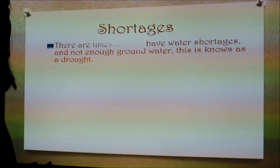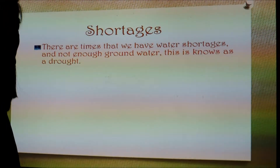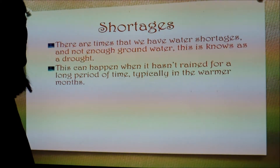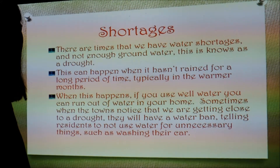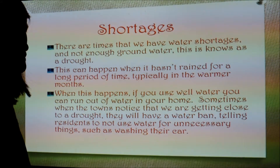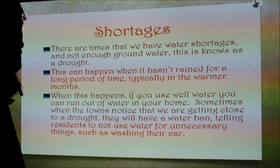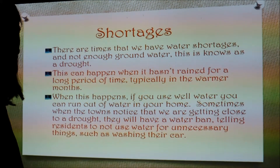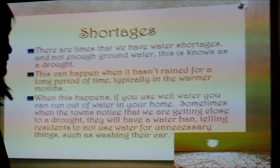There are times that we have water shortages and not enough groundwater — this is known as a drought. This can happen when it hasn't rained for a long period of time, typically in the warm weather months. When this happens, if you use well water, you can run out of water in your home. Sometimes when a town notices we are getting close to a drought, they will have a water ban telling residents not to use water for unnecessary things such as washing cars.